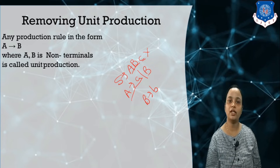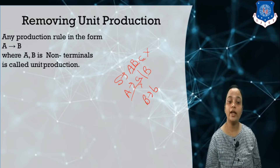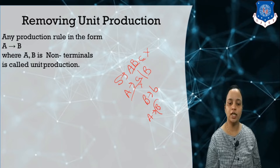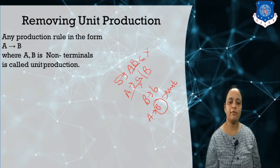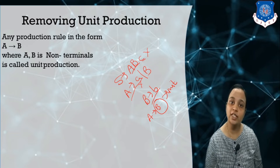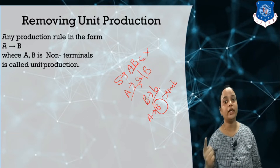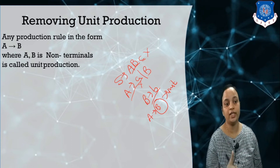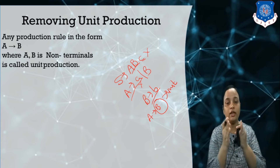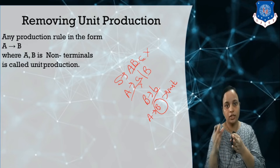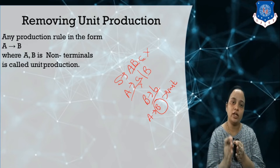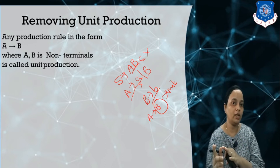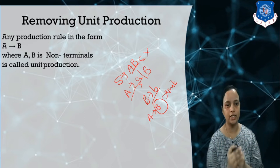Can we say A derives small a is a unit production? No, because it contains a terminal, not a non-terminal. A derives B — here the right hand side contains a single non-terminal, so this is a unit production. The rule states: if the right hand side contains a single non-terminal, then and only then we can call it a unit production.